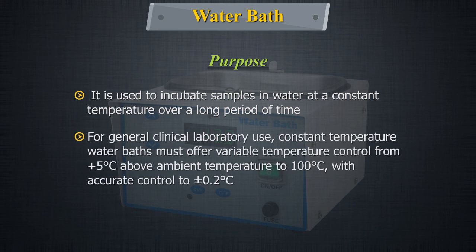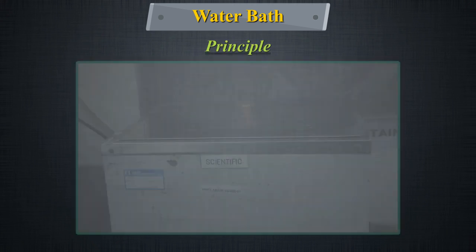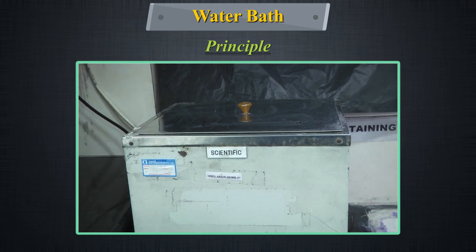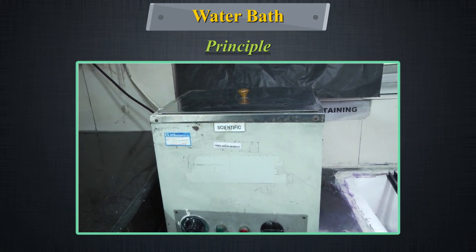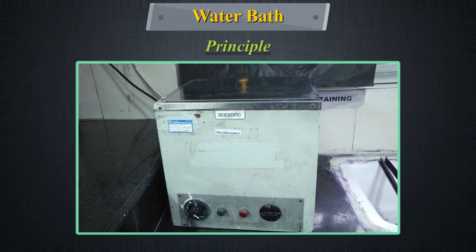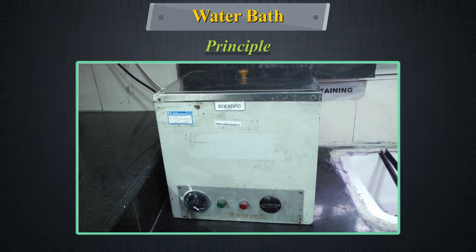For general clinical laboratory use, constant temperature water baths must offer variable temperature control from 5°C to 100°C with accurate control to ±0.2°C. Water baths are made of steel and are generally covered with electrostatic paint with high adherence and resistance to environmental laboratory conditions. Water baths have an external panel on which the controls can be found.